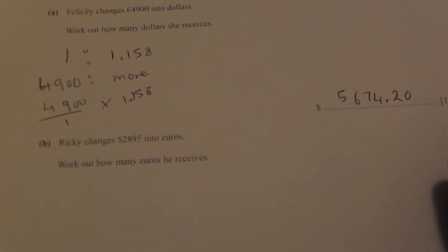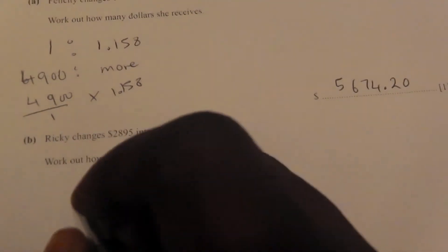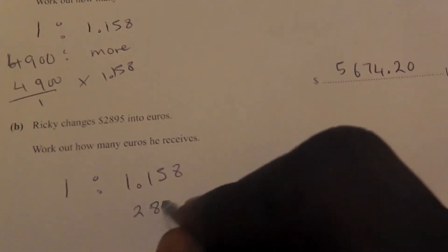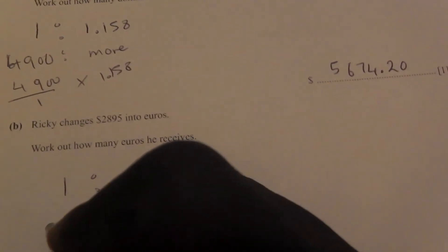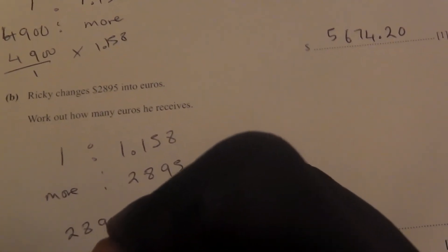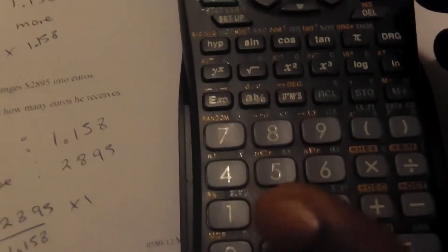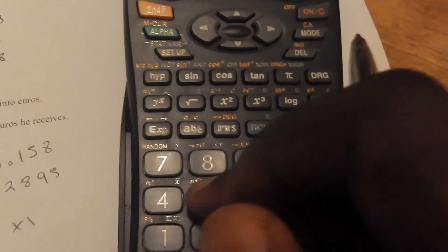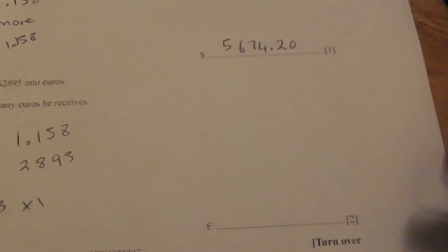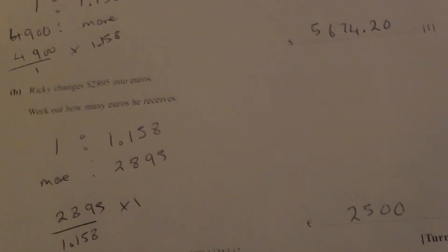Reggie changes 2895 dollars into euros. Using the same ratio of 1 to 1.158: for 2895 dollars, it will be 2895 divided by 1.158 times 1. Putting that into the calculator: 2895 divided by 1.158 equals approximately 2500 euros.